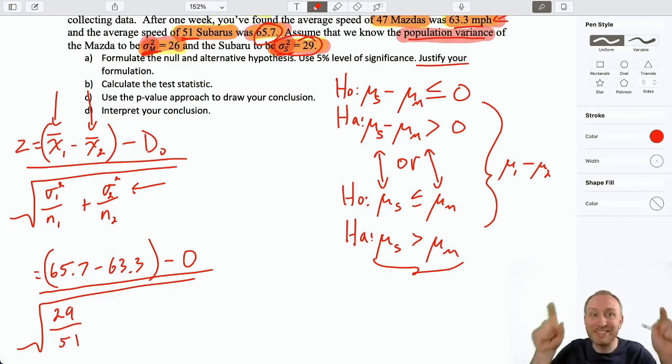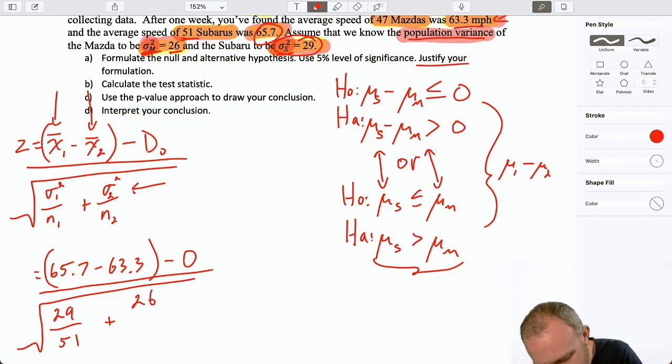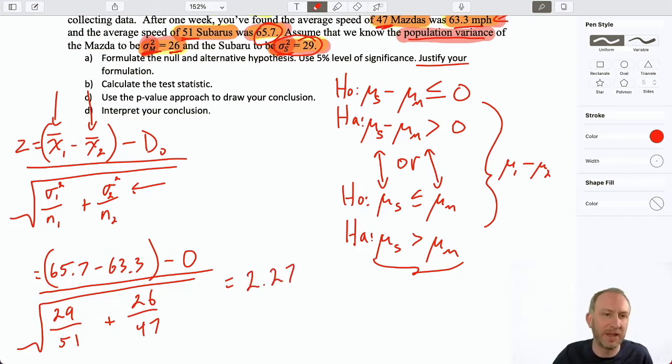Make sure that you have everything corresponding properly. So, I have the variance of population one divided by the sample size of population one. I absolutely see students get these mixed up. Again, it's such an easy mistake to make. So, we have to make sure everything is consistent. There's variance for Mazda is 26. My sample size for Mazda is over there, 47. Now, we can punch through. 63.1 divided by 29 over 51 plus 26 over 47. And I have a Z-score of 2.27. I'm rounding to two decimal places.